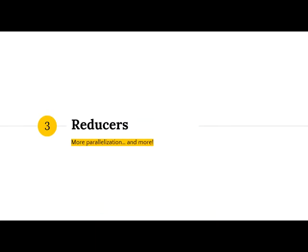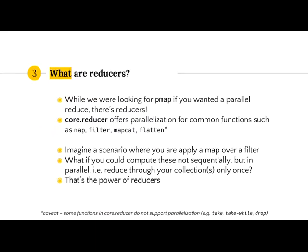Let's move on into reducers, which is more parallelization. What are reducers? Many of you may have heard of transducers — you can think of reducers as parallelized transducers. Under clojure.core.reducer, which isn't part of Clojure core and must be required explicitly in your namespace, you can get parallelization for a lot of common functions such as map, filter, mapcat, flatten, and others. A caveat: a couple of them don't actually support parallelization — functions like take, take-while, and drop.